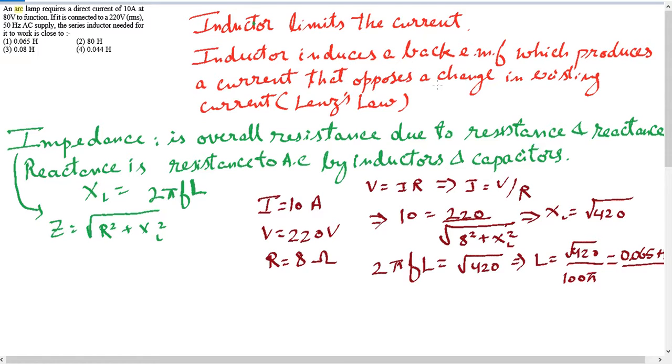An arc lamp requires a direct current of 10 amperes at 80 volts to function. If it is connected to 220 volts RMS 50 Hertz AC supply, the series inductor needed for it to work is close to.